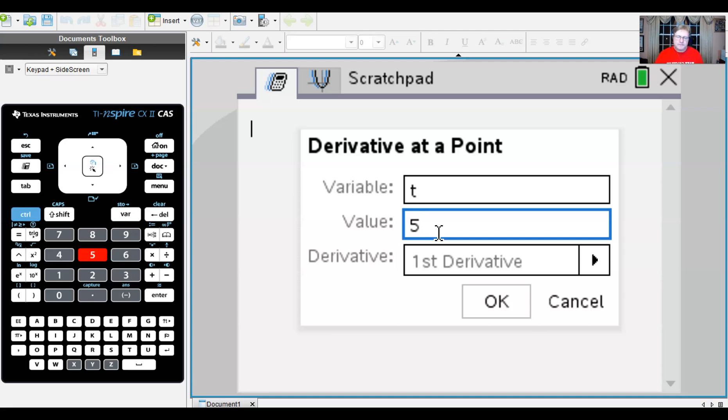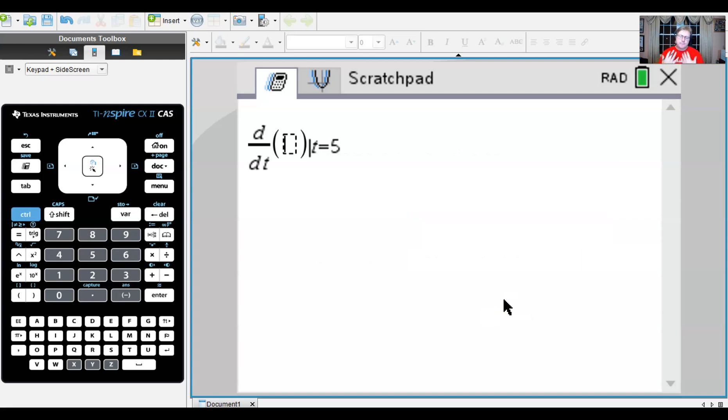And that's something that we can talk about in a later video. The value that we're going to compute this at according to our problem was five, right? We're going to find g'(5). And then once I hit okay it basically brings me to my derivative template such that the time is five.